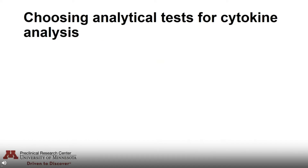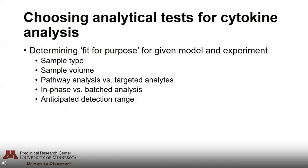When you decide to incorporate cytokine analysis into your research, it is important to consider the pros and cons of commercially available kits for cytokine detection. First, you need to determine what is going to be fit for purpose given your experimental model and design. Consider your sample type — will you be studying a blood product such as serum or plasma, or something more complex like cerebrospinal fluid, saliva, or urine? Sample volume is also important — is this something you have in abundance or need to conserve? Another important consideration is whether you're interested in pathway analysis or just a few targeted analytes. If you already know which cytokines you're interested in, you might only want to run an assay on a small handful rather than multiplexing for pathway-level analysis.